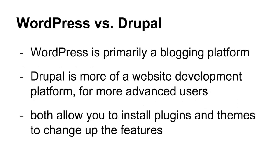The main difference between the two platforms is that WordPress is primarily a blogging platform that helps you easily manage posts, pages, and themes, while Drupal is more of a website development platform for more advanced users. Both overlap in a few areas and allow you to install plugins, adjust settings in the dashboard, and customize themes to change up the features as well as the look and feel of your new blog.